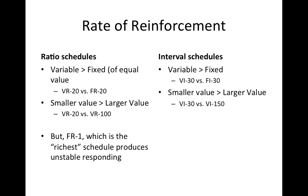One of the primary effects on rate of responding is rate of reinforcement — how often reinforcement occurs. In ratio schedules, variable schedules generally produce higher rates than fixed schedules of equal value. So comparing a VR-20 versus an FR-20, we would expect the VR-20 to produce a higher rate of responding. Smaller values generally produce higher rates than larger values — for example, a VR-20 would probably produce a higher rate than a VR-100, although that may not always be the case.